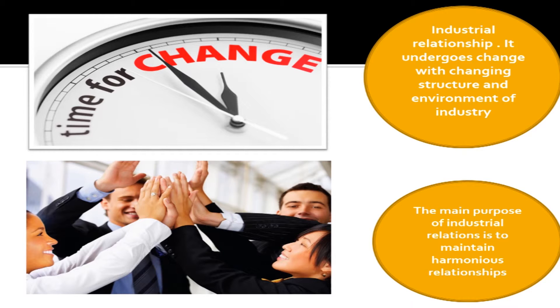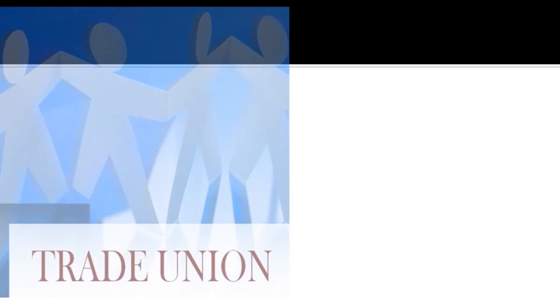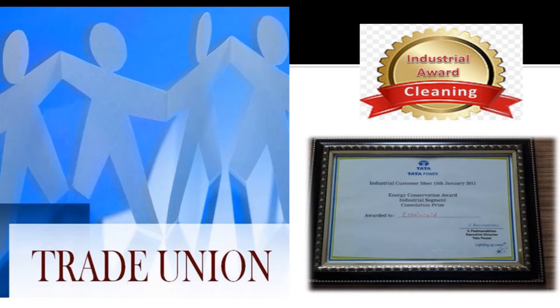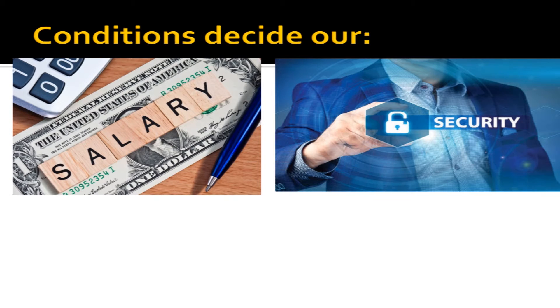Industrial Relations can be discussed in various ways as various stakeholders of the industry interact and work with each other at multi-various dimensions. This may be discussed in four steps. As workers, we associate industrial relations with trade unions, industrial awards, and labor laws that establish the conditions under which we work. This includes our salary, security, job security, and training opportunities.